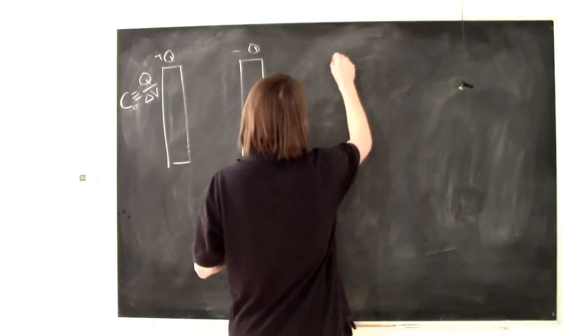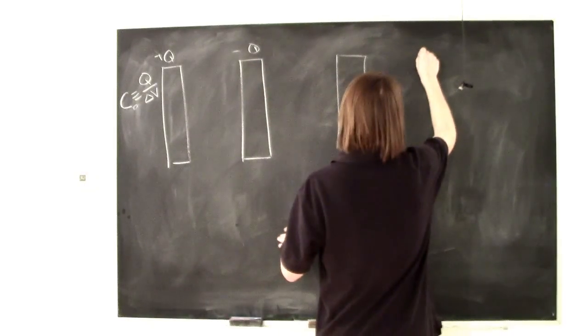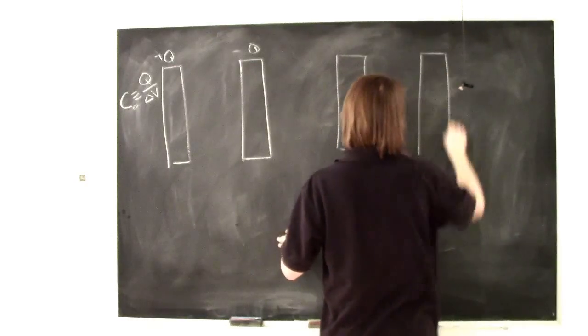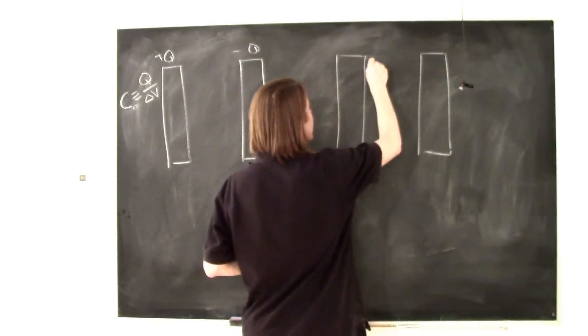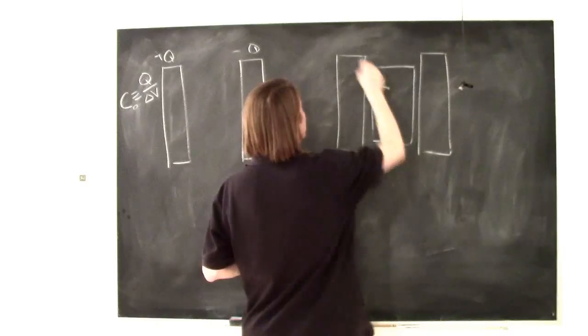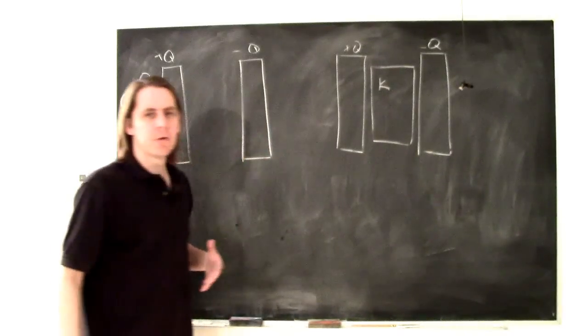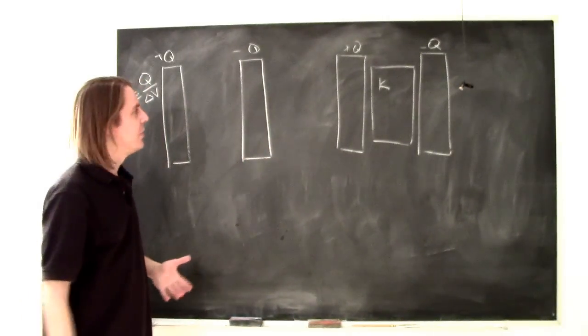We were talking about what happens if you stick a dielectric material, which means an insulator, in between the plates, like this. So if we stick an insulator in here, we give it a dielectric constant K, again, plus and minus Q, and we try to figure out what does that do to the capacitance.